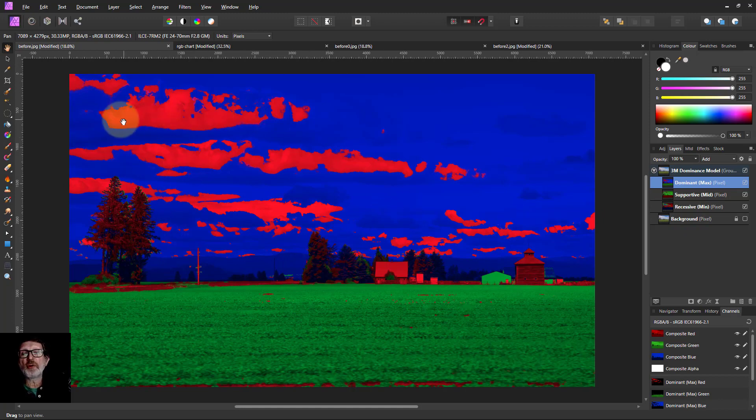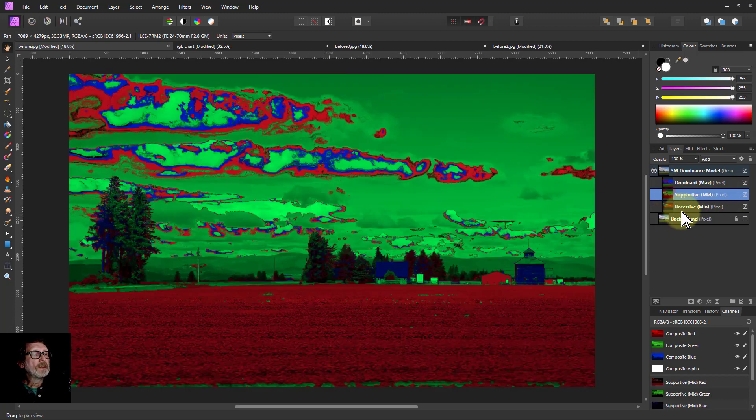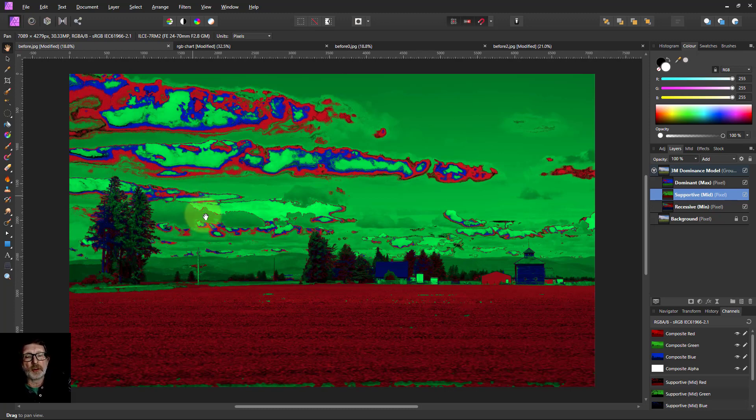This shows that the red is the highest value in parts of the sky, which is interesting and can be useful. Then you've got the middle one and green is often common as a middle color in skies because it's cyan but blue is more dominant and there's a lot of red in the ground.